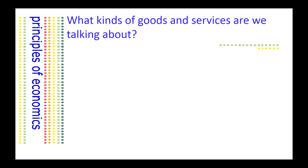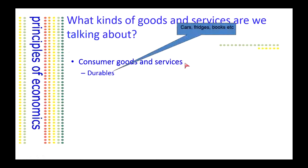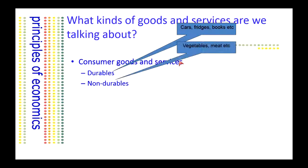So what kinds of goods and services make up GDP? It's useful to place these in categories. The first category are consumer goods and services — the sorts of goods and services purchased by ordinary households. These include durable goods like cars, fridges, and books, and also non-durable goods like vegetables, food products, and meat.